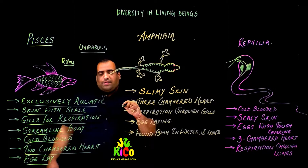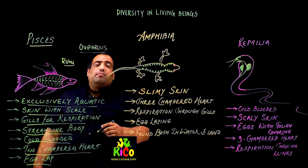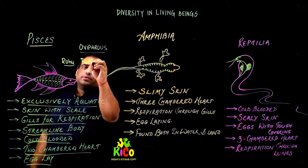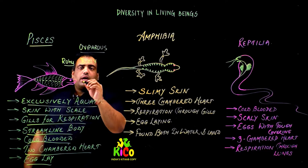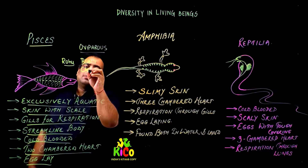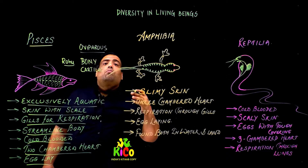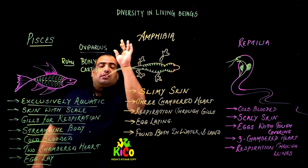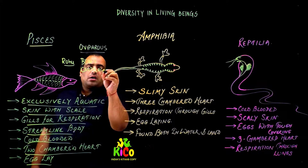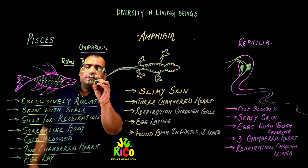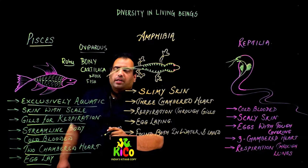For extra information, there are two kinds of fishes. The first is bony fish, like Labeo rohita. The second is cartilaginous fish — fish whose skeleton is made of cartilage — like Scoliodon (the shark). So these are the two types of fish.